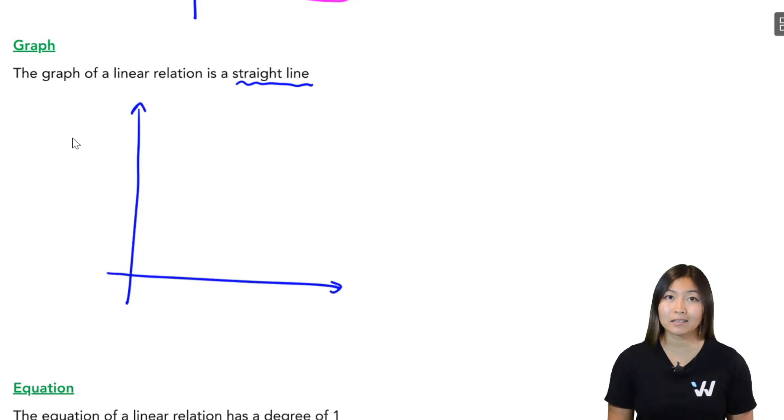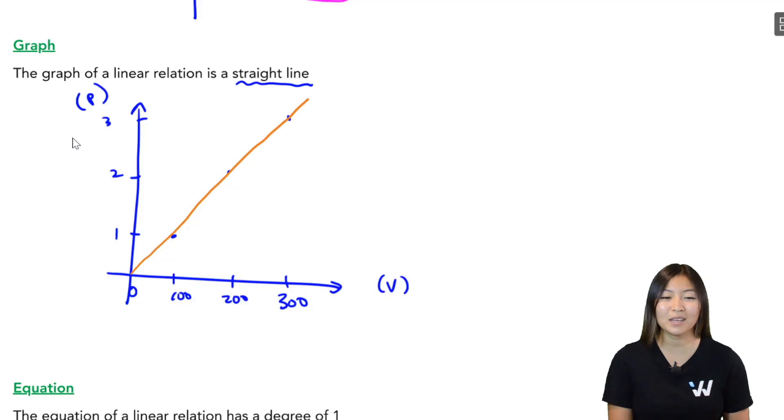So let's go ahead and give this graph a quick sketch. So on my x-axis, on my horizontal axis, I have my independent variable, which is the number of views. In my vertical axis, this is my dependent variable, which is the amount that we get paid. So at zero views, 100 views, 200 views, 300 views, and so on, we get paid $1, $2, and $3, respectively. So now if I connect all of these dots together, use a ruler if you got one, we do get a straight line, meaning that this guy is indeed a linear relation.